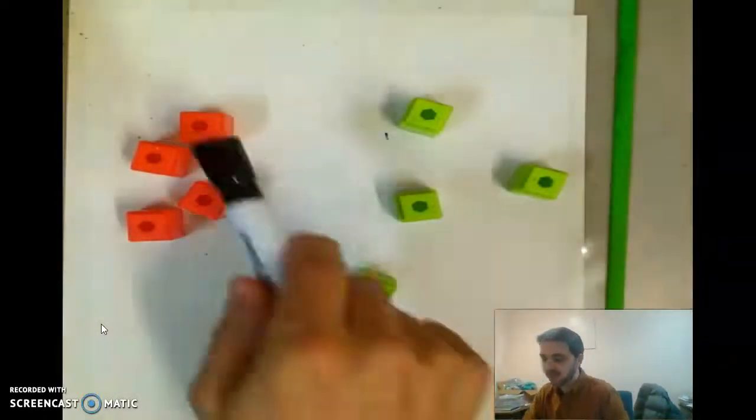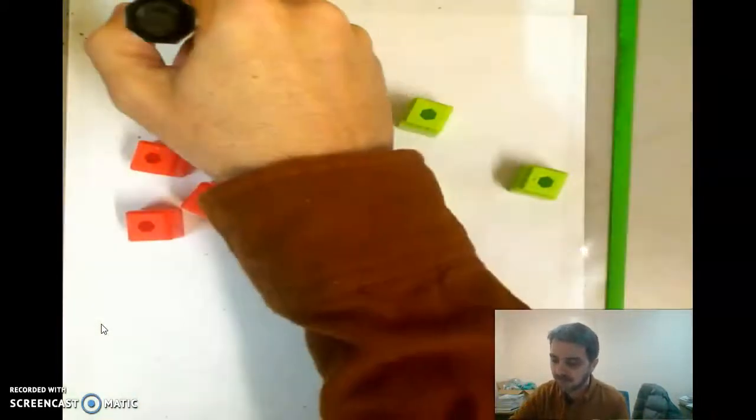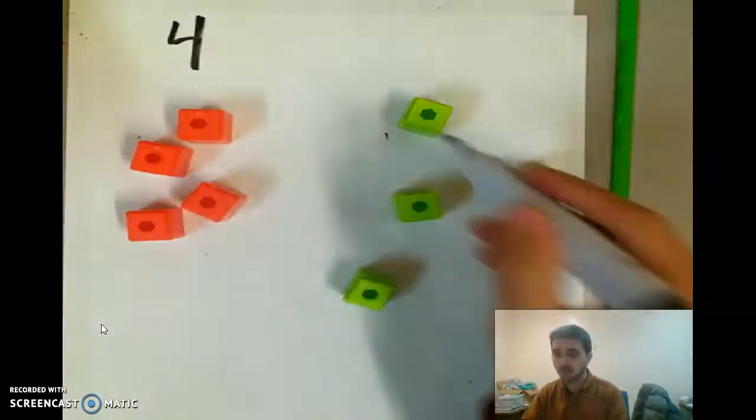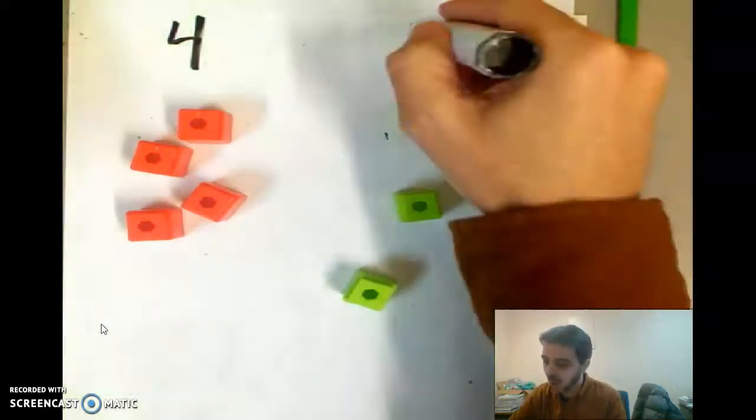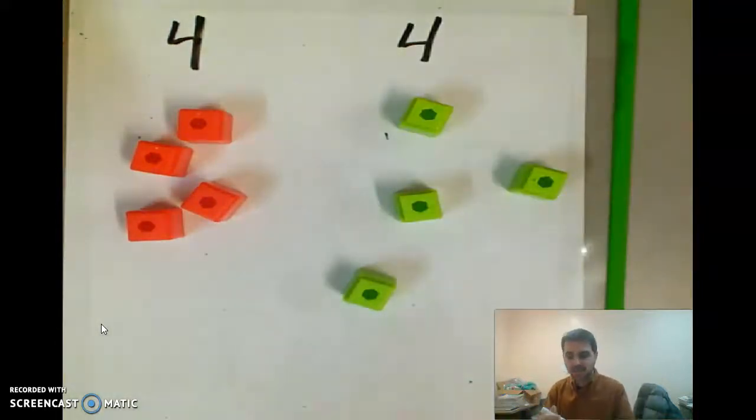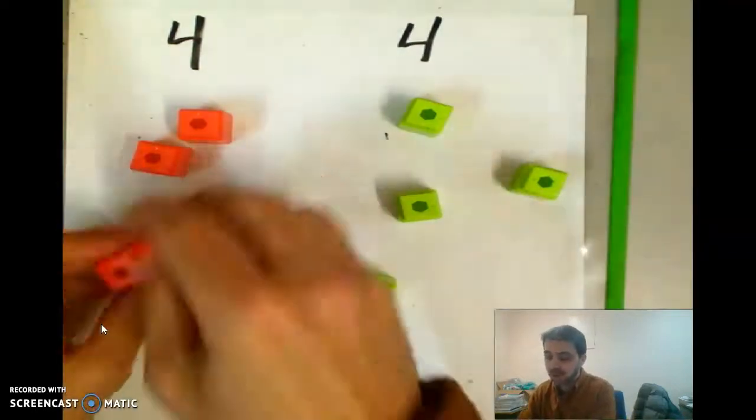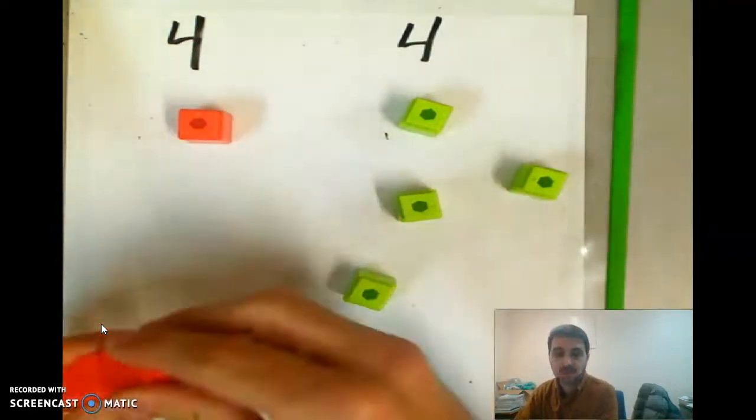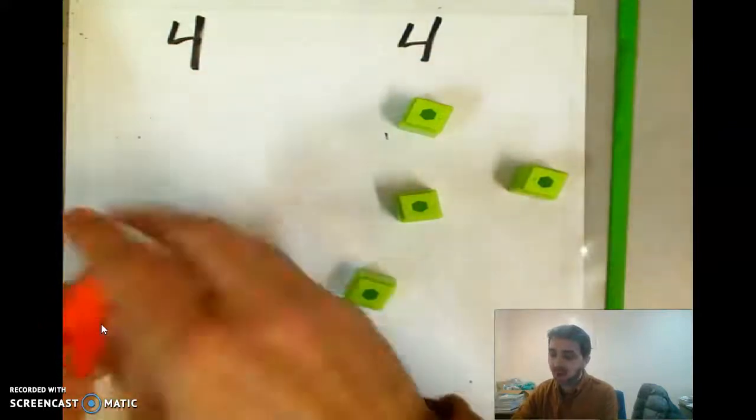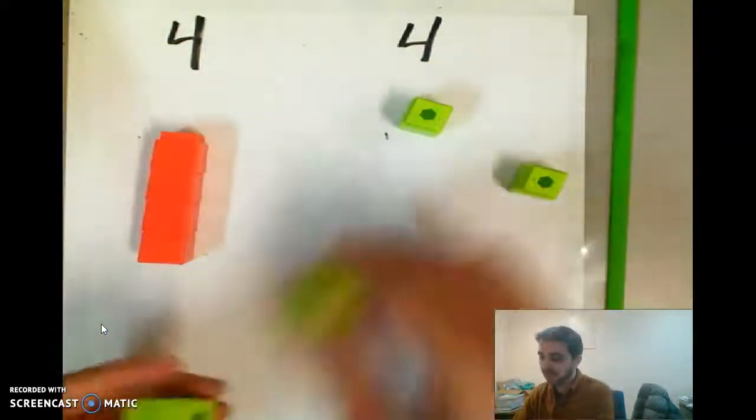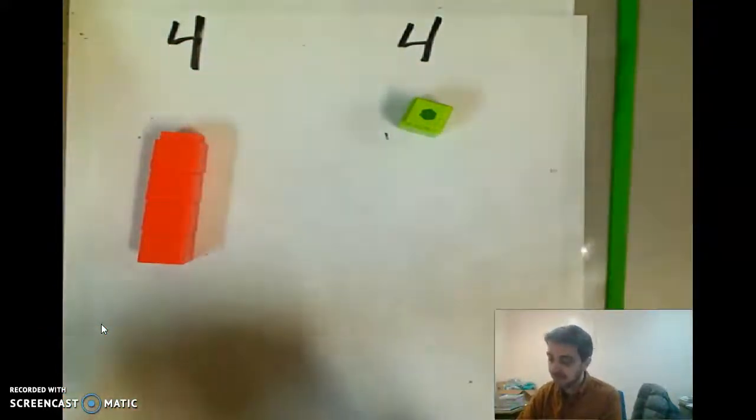So let's count the orange. One, two, three, four. Let's count the green. One, two, three, four. Now wait a second. There's not more orange, right? And there's not more green. They are - what's the word for that? They are the same, right? They're the same. Can you think of a math word that means the same?